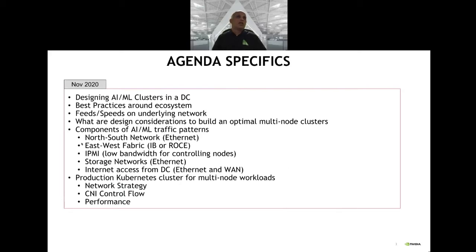There are five networks listed here covering speeds and feeds as a design consideration in the data center. Nivedita will cover the production Kubernetes cluster, multi-node workloads, and the CNI control flow.